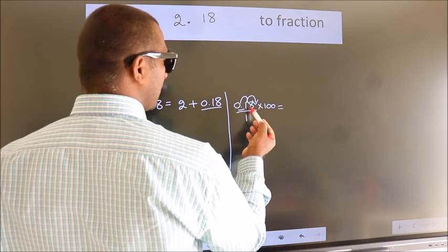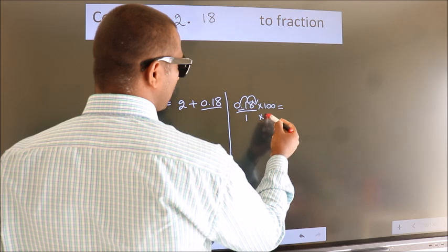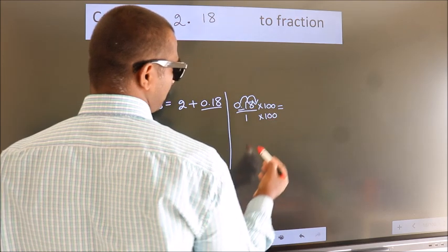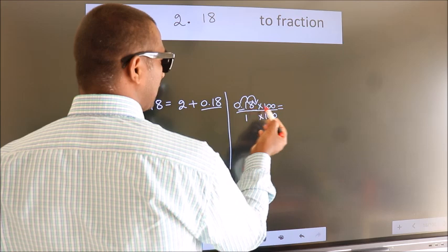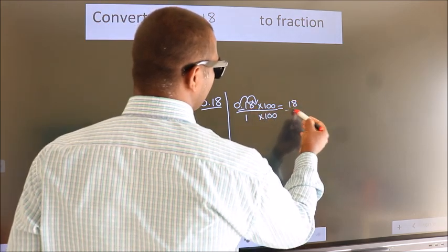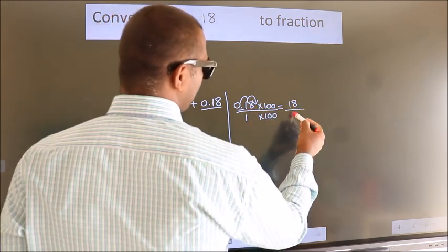Whatever we are multiplying in the numerator, in the denominator also do the same. Next, 0.18 into 100 is 18. 1 into 100 is 100.